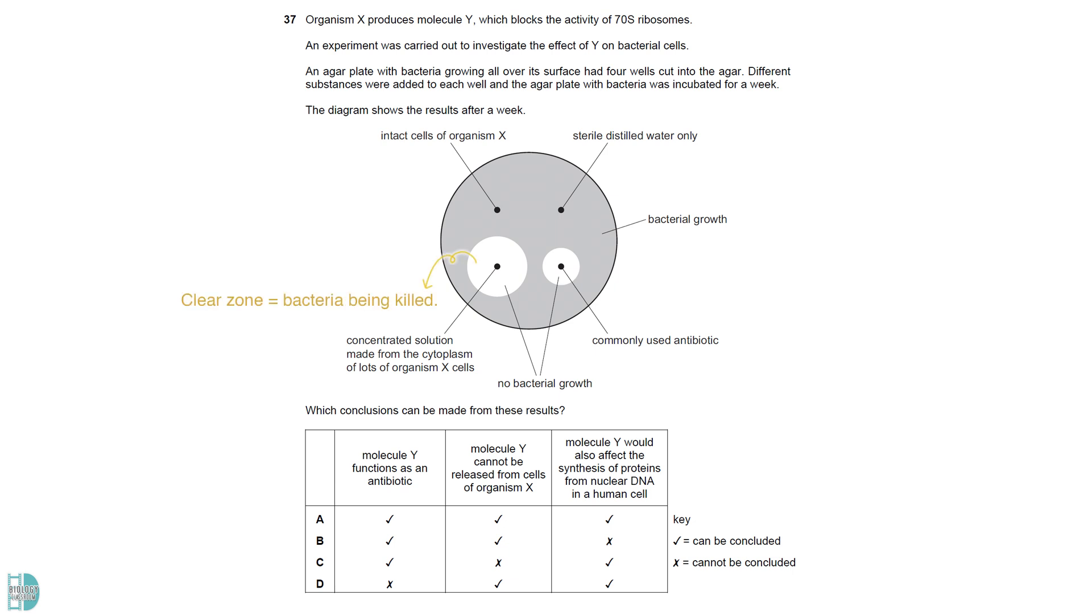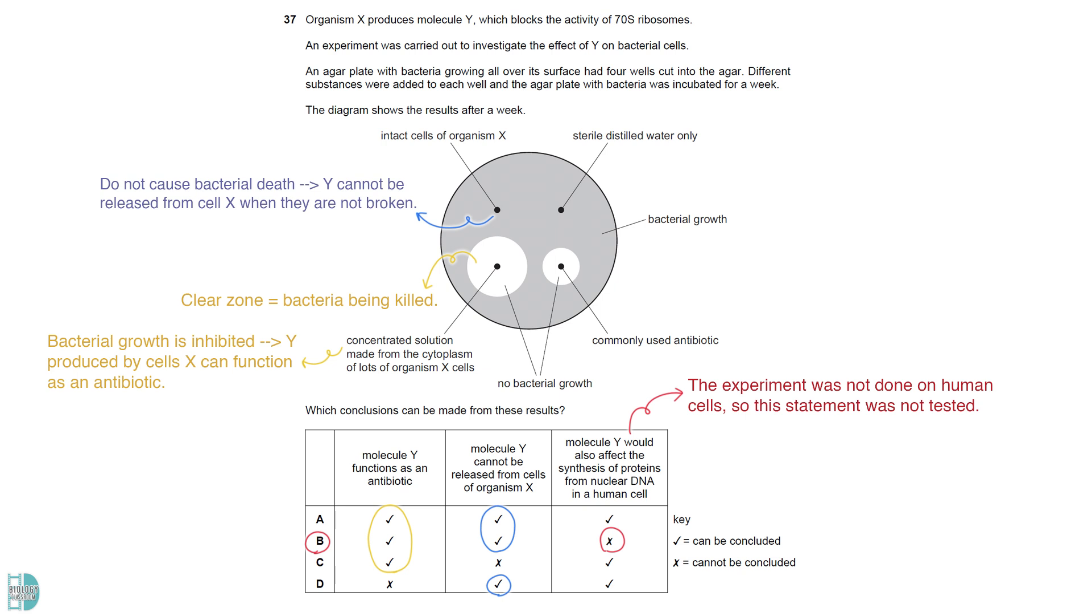The clear zone indicates bacteria being killed. The well that contains a concentrated solution made from the cytoplasm of X shows that bacteria growth is inhibited. So it can be concluded that molecule Y, which is produced by cell X, can function as an antibiotic. The intact cells of X do not cause bacteria death. It shows that molecule Y cannot be released from cell X when they are not broken. The experiment was not done on human cells, so the last statement was not tested.